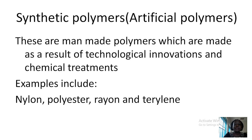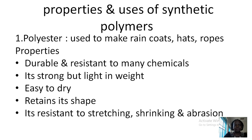Now let's look at synthetic polymers. The synthetic polymers are the artificial polymers. These are man-made polymers which are made as a result of technological innovation and chemical treatments, and we mainly treat the natural polymers to come up with the synthetic polymers. For example, nylon, polyester and rayon. What are some of the properties and uses of the synthetic polymers?